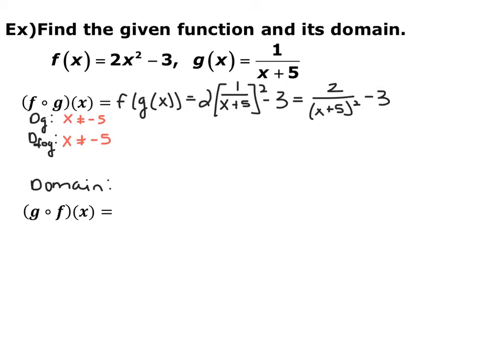For this one, our domains are the same. The domain of the inside function and the domain of the final function are the same. When you find the domain of the composite, it's the most restrictive possibility — you combine these two to create the most restrictions. So the domain is x such that x cannot equal negative 5.